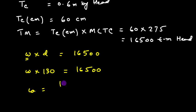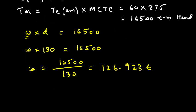So W times 130 is 16,500. Now W will be 16,500 divided by 130, which is 126.923 tons. Well, we can round off to 126.9 tons. That's the answer.